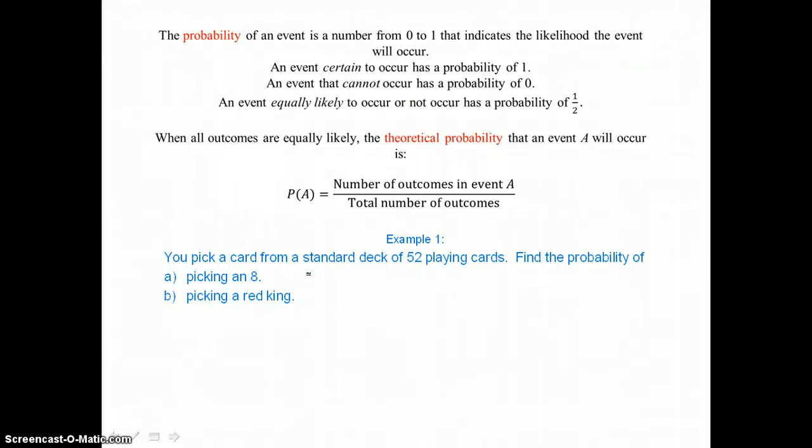When all outcomes are equally likely, the theoretical probability that an event A will occur is a fraction: the number of outcomes in event A divided by the total number of outcomes. I like to think of this as successes over possibilities.